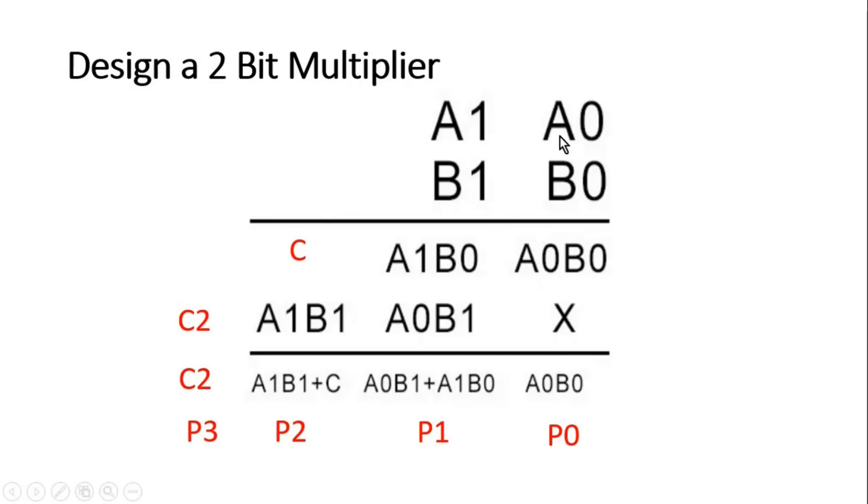Then we multiply A0 by B1, A0 by B1 I am writing here. Then we multiply A1 with B1 and I am writing here. Then we simply perform add operation here.